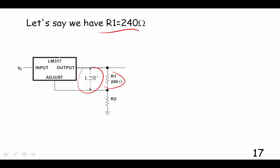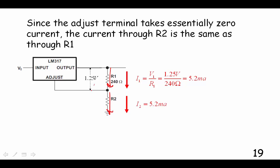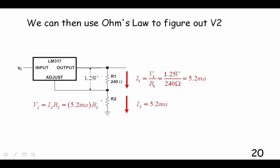By Ohm's law, we can find the current through R1, just using that simple equation. And we know that the current that goes through here must be the current through here, because we're not getting any current drawn by the adjust pin. So the voltage on R2 is just going to be that 5.2 milliamps, if we had 240 ohms there, times whatever R2 is.